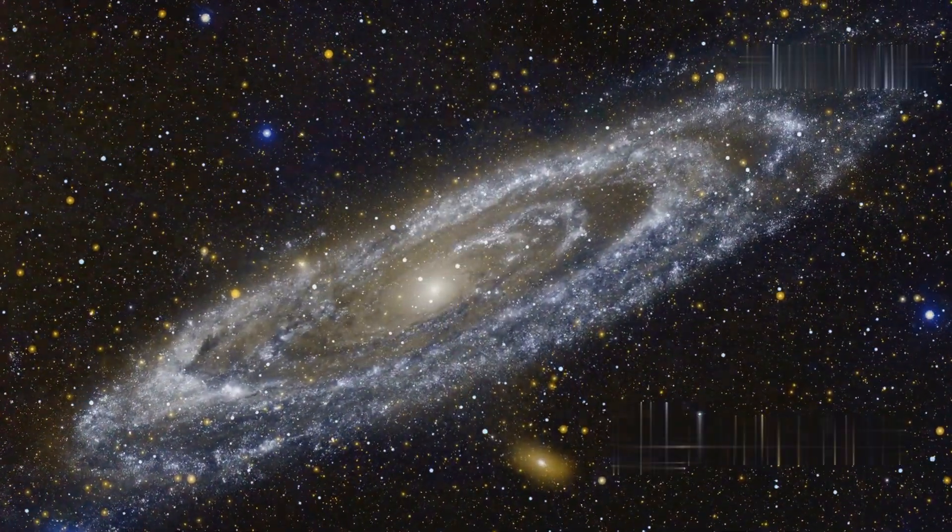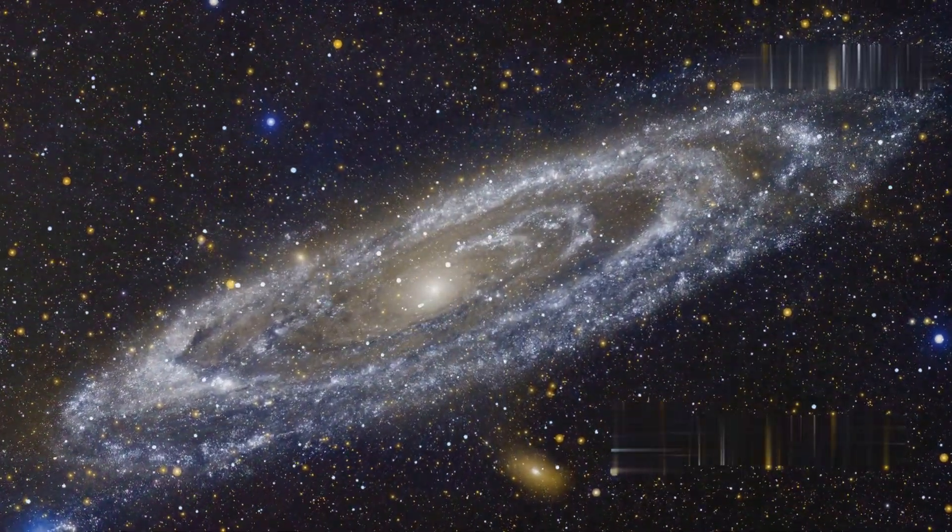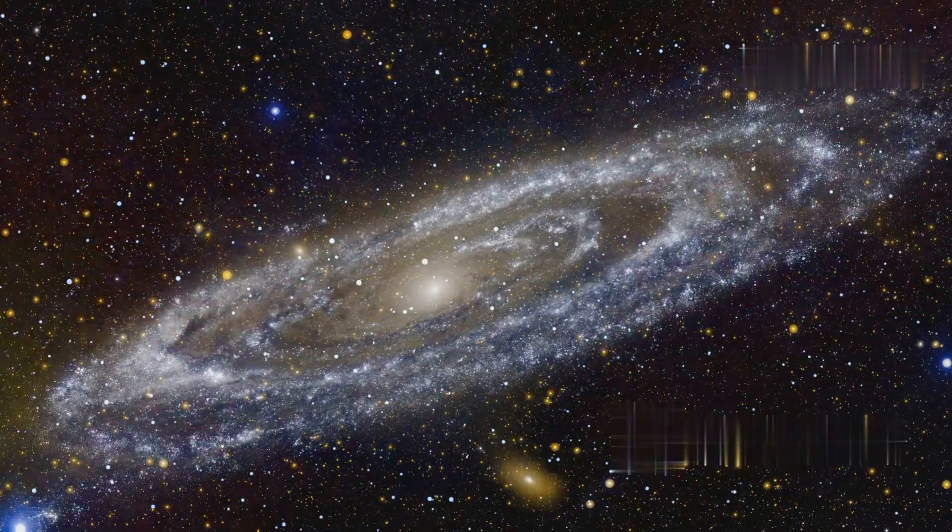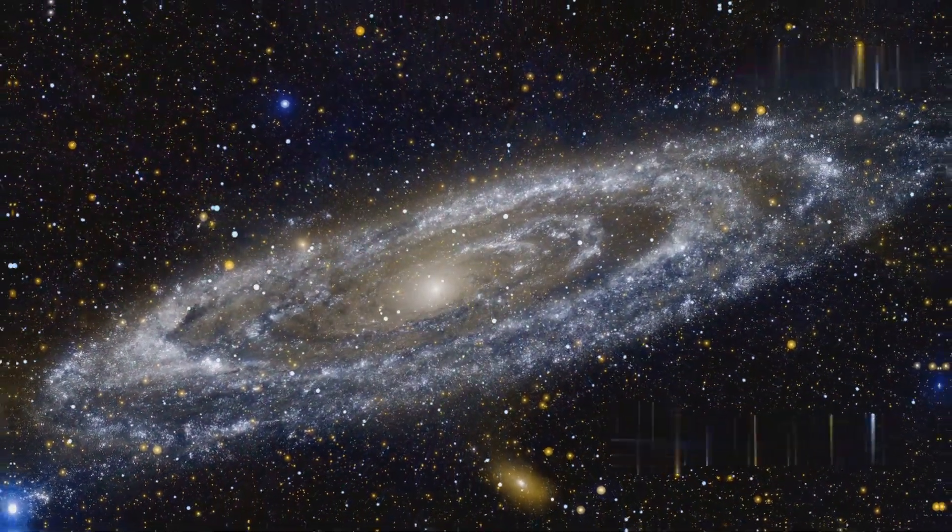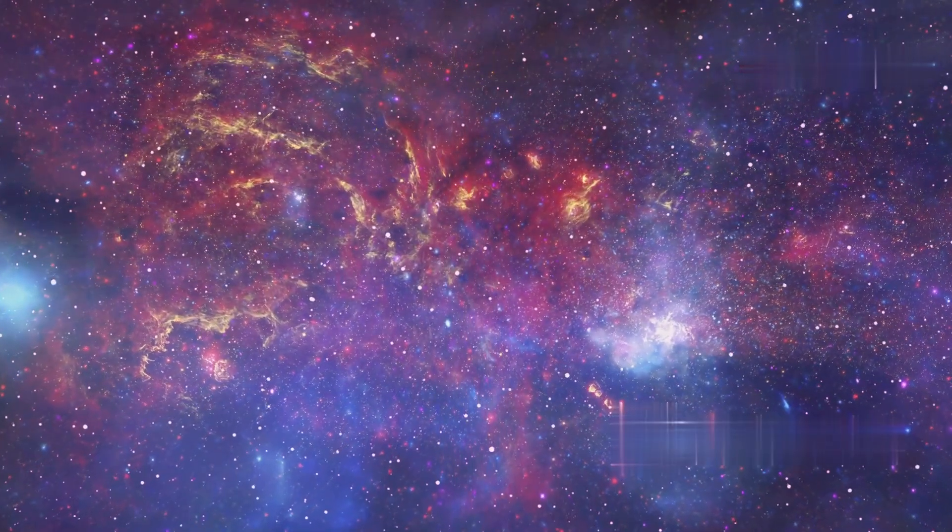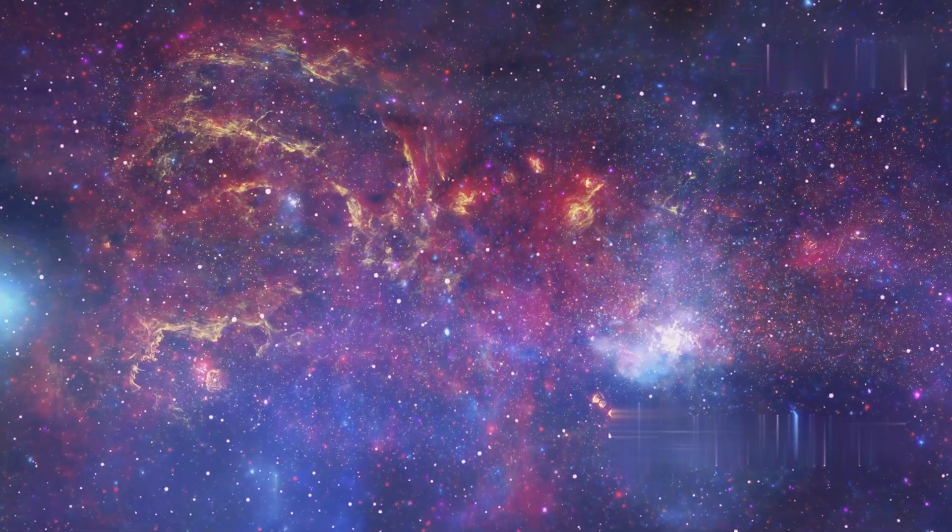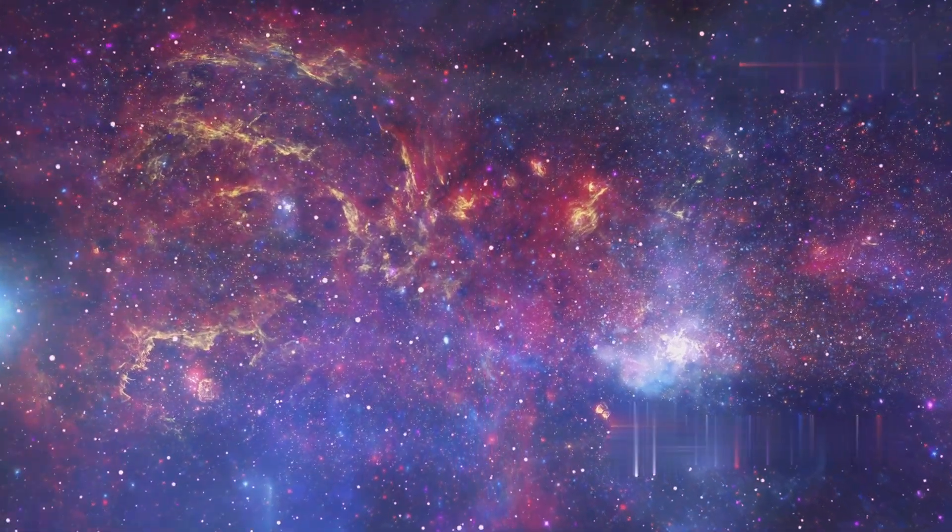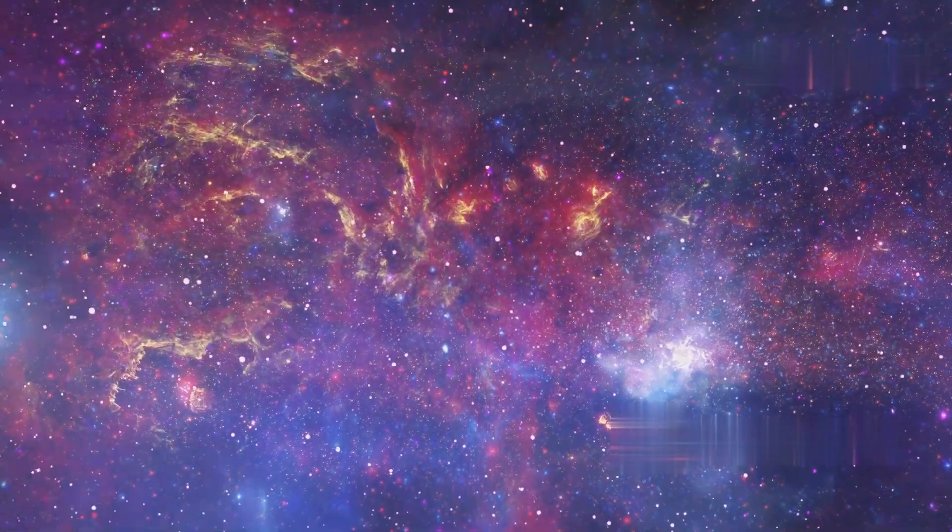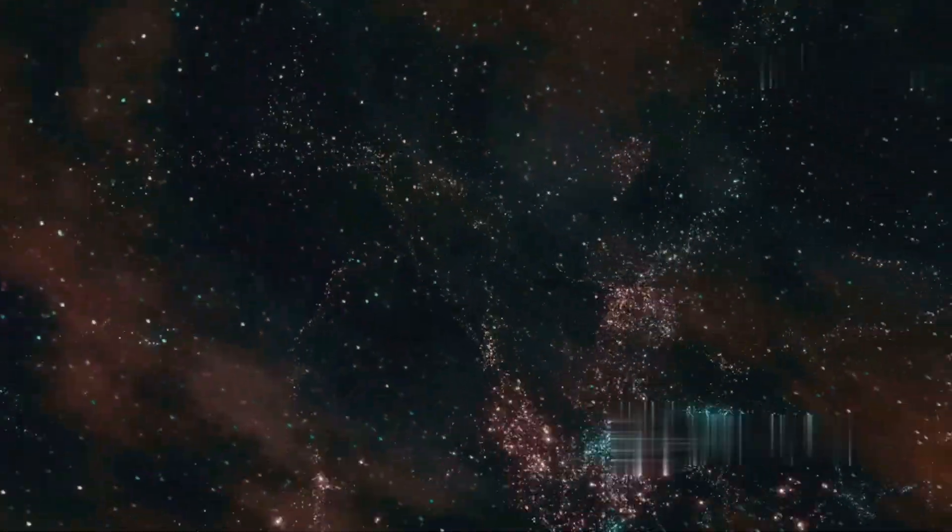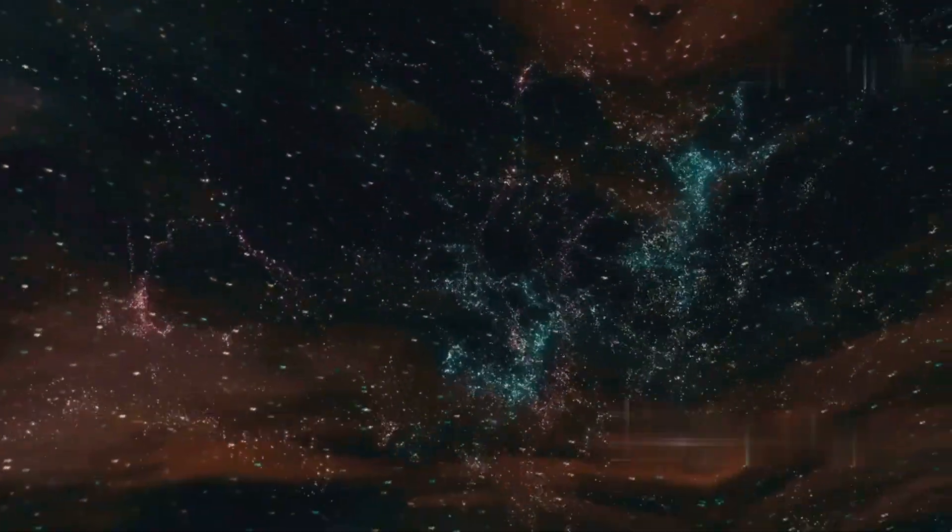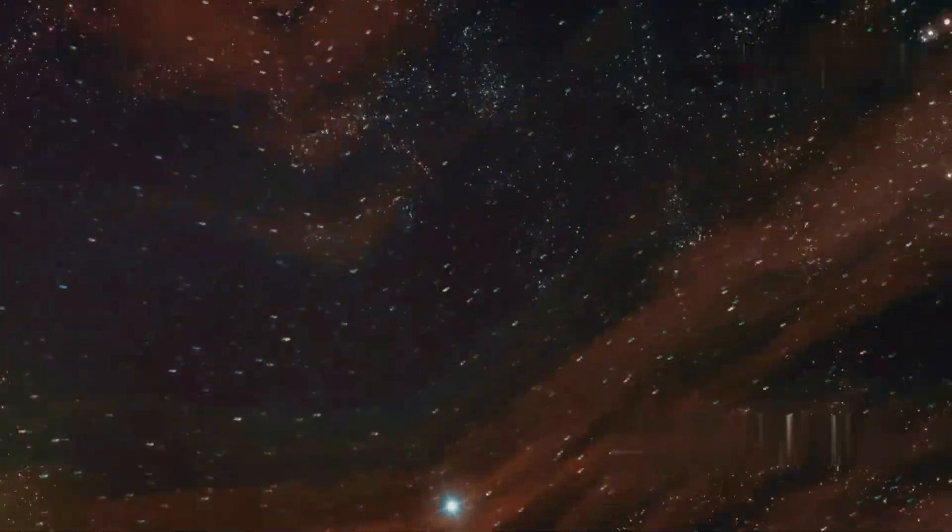The Andromeda galaxy, our nearest galactic neighbor, is a spiral galaxy located about 2.5 million light years away. The Hubble Deep Field, an image captured by the Hubble Space Telescope, revealed thousands of galaxies in a seemingly empty patch of sky. This image provided further evidence that our universe is filled with an unfathomable number of galaxies.